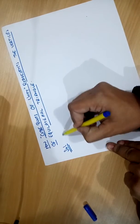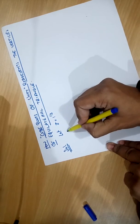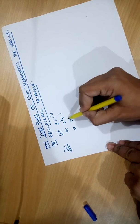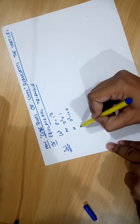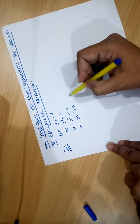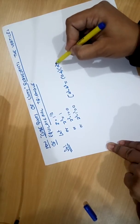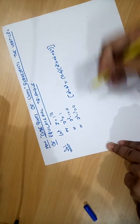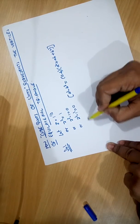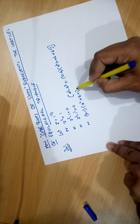So, let z equal to 1 to the power 1 by 3. We can write this as z cubed equals 1, or z cubed minus 1 equals 0. We can also write it as z cubed minus 1 cubed, meaning a cubed minus b cubed. Using the formula for a cubed minus b cubed, we expand: z minus 1 times z squared plus z plus 1 equals 0.